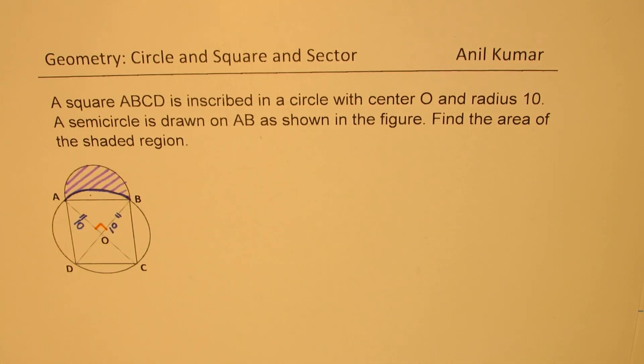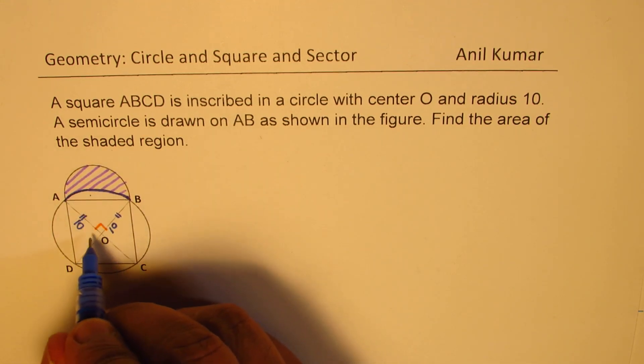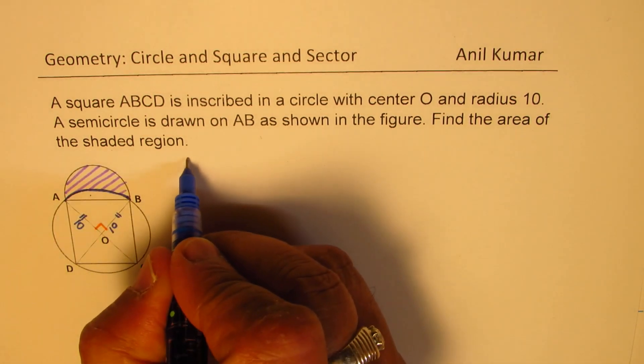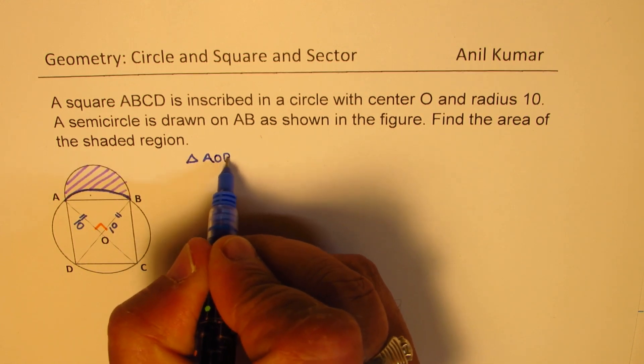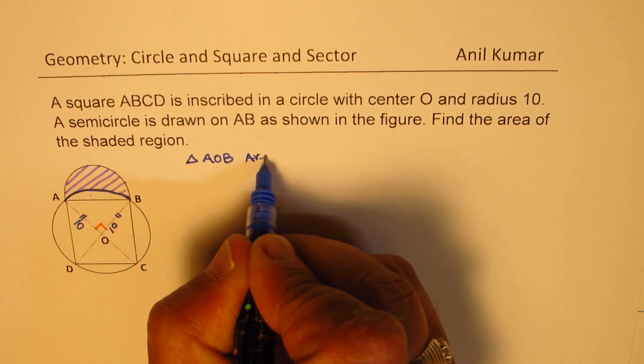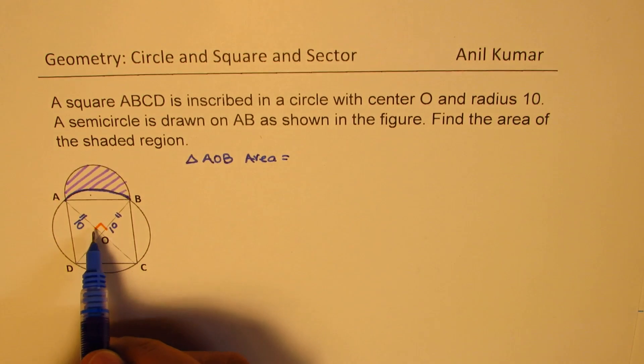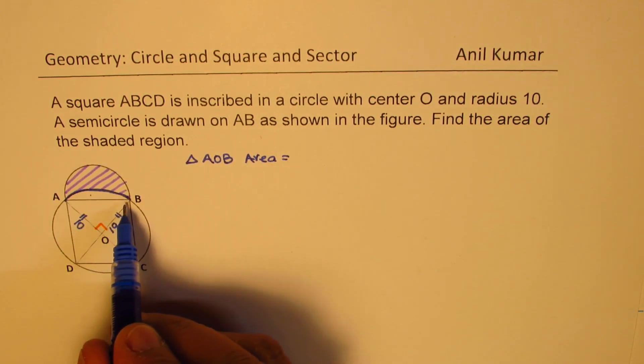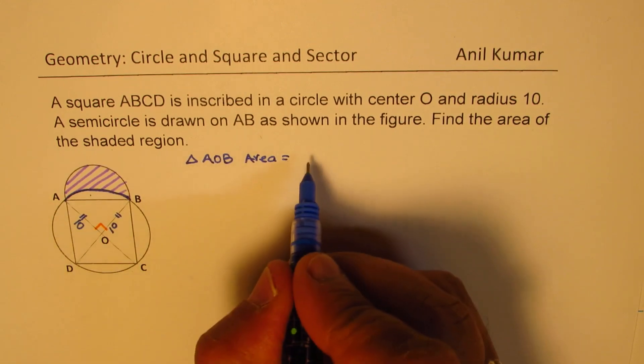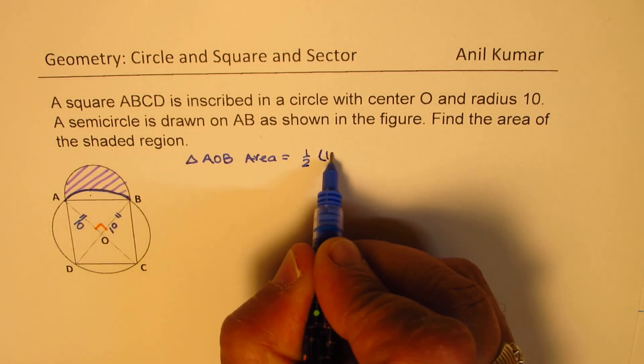So let us first find area of the triangle AOB. Area is what? Since this is right-angled triangle, one of the sides could be base, the other could be altitude, and we have the formula half base, which is 10,